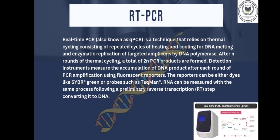Detection instruments measure the accumulation of DNA products after each round of PCR amplification using fluorescent reporters. The reporters can be either dyes like SYBR Green, or probes such as TaqMan. RNA can also be measured with the same process following a preliminary reverse transcription step that converts it into DNA.